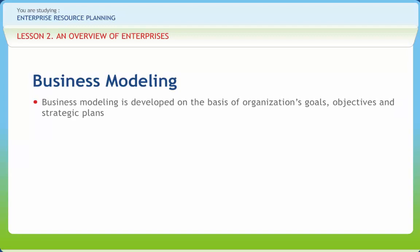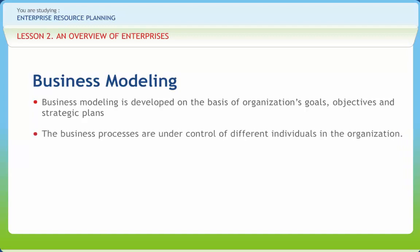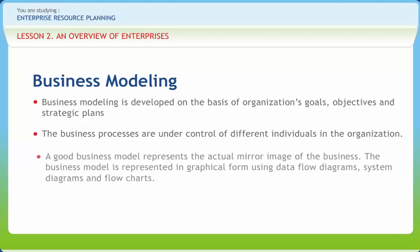Business modeling is developed on the basis of the organization's goals, objectives, and strategic plans. The business processes are under the control of different individuals in the organization. A business model is a representation of the business as an integrated system, having several interconnections and interdependencies of several processes and subsystems. It helps for seamless integration through supply chain management, resource management, integrated data model technology, and other functional departments. A good business model represents the actual mirror image of the business and is represented in graphical form using data flow diagrams, system diagrams, and flowcharts.